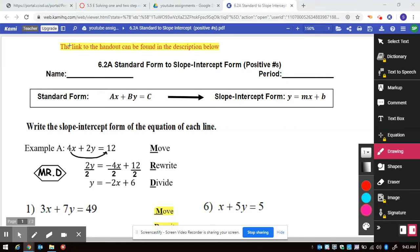Hey there, welcome back. Today we are looking at 6.2a, standard form to slope intercept form.